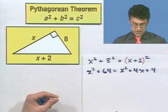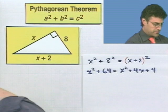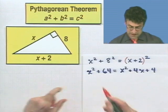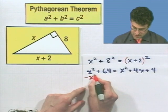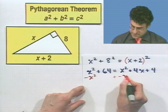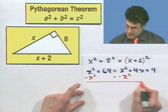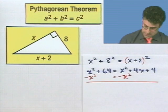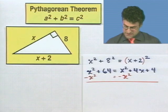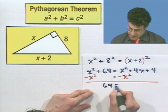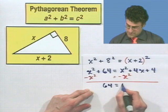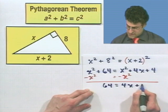And notice this is actually kind of cool, because if I subtract X squared from both sides, this seemingly quadratic equation magically becomes a linear equation. Check it out. X squared minus X squared is 0. I'm just left with 64 equals X squared minus X squared is 0. I'm left with 4X plus 4.